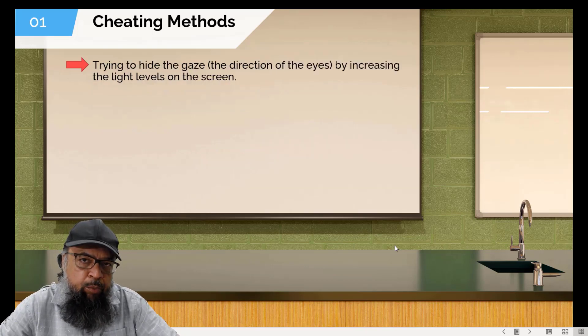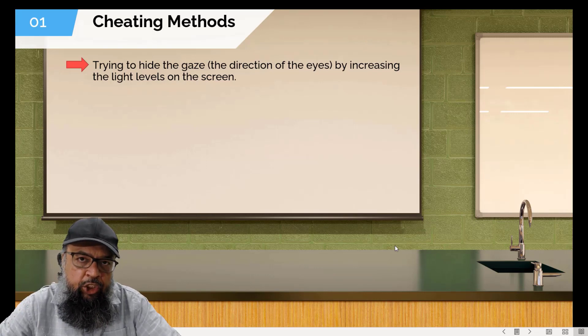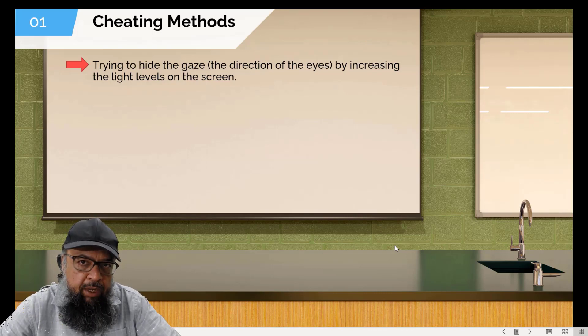And because some of the proctoring tools also check the gaze or the eye movement, students use a few techniques to hide their eye movement by manipulating the light in the environment. So they change the light levels so that software or humans won't be able to check their eye movement.